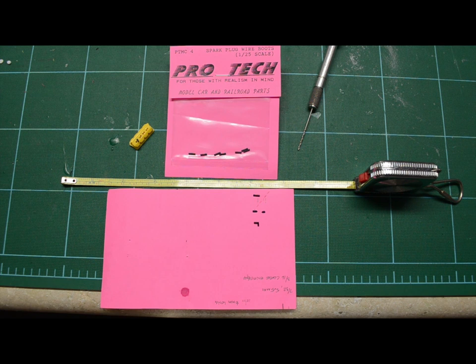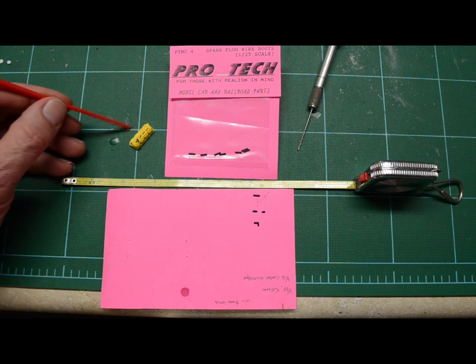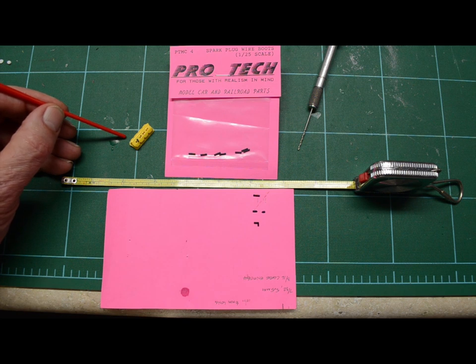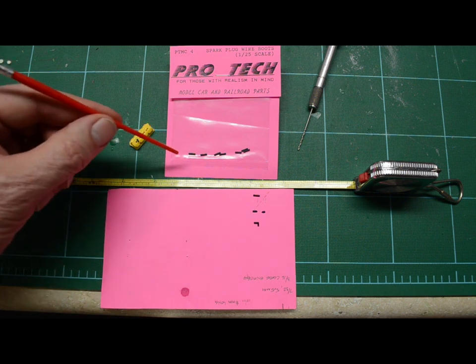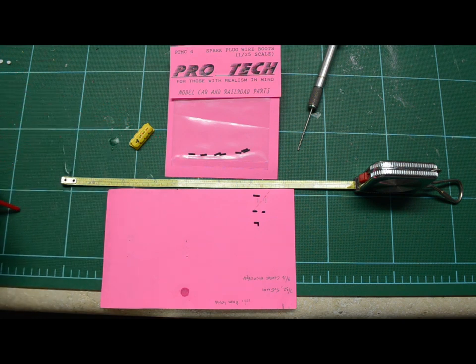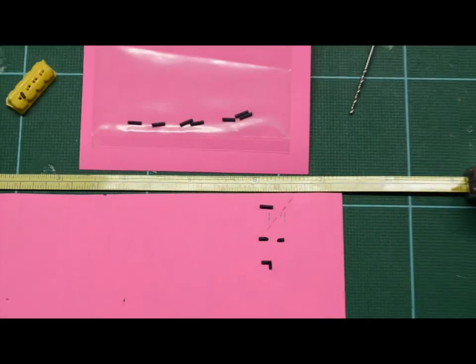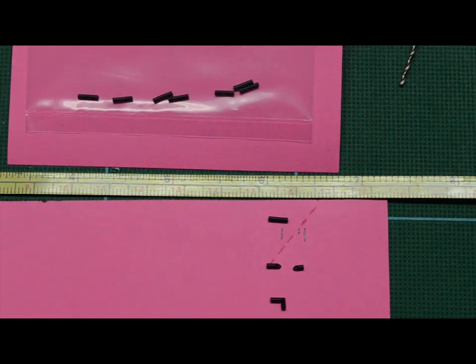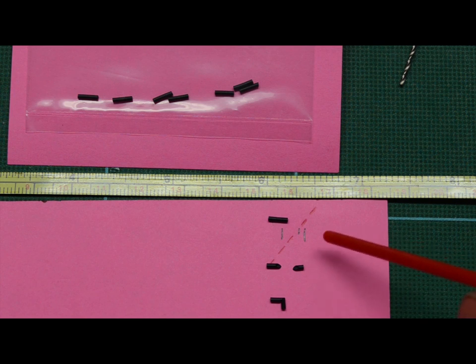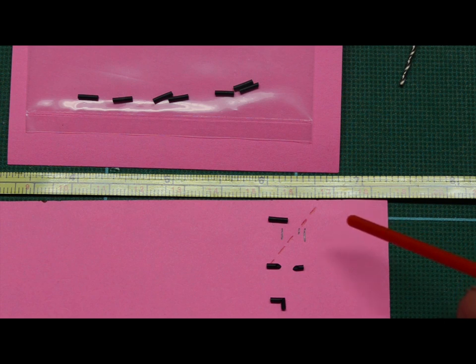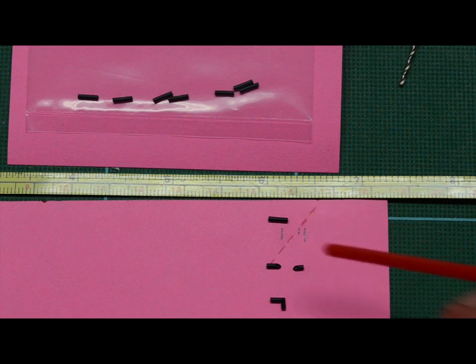This particular valve cover has dual plugs, and the holes are drilled out with a number 56 drill bit, and that'll accept the outside diameter of these boots. To make our boot, these boots are actually six millimeters long. I don't necessarily like to deal with millimeters, but sometimes dealing with something so small it's a little more accurate. What we want to do is make one side of this boot longer than the other...